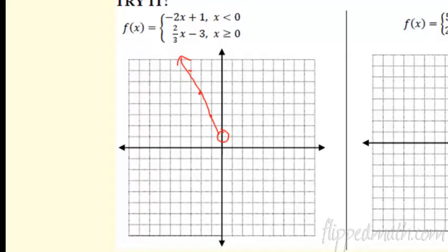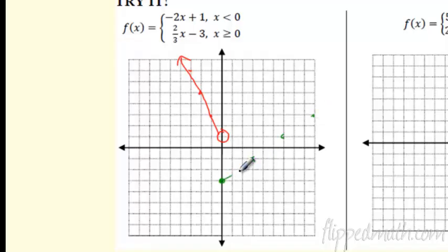Then I go to my next line, using a different color. Start at the y-intercept of negative three. From there, I go up two over three each time — up two over three, up two over three. Draw my line. It's always positive, always bigger than zero, and it's equal to, so I know it's a solid dot. There's my piecewise function — I'm good to go.